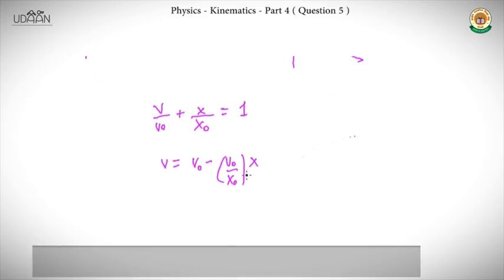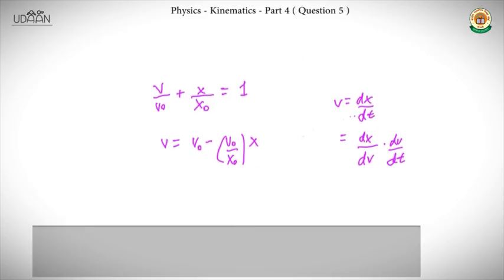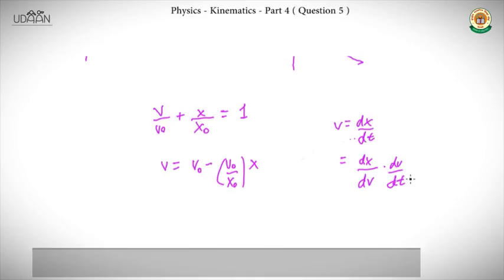We know that velocity v = dx/dt. To introduce acceleration, we apply the chain rule: dx/dt = (dx/dv)·(dv/dt). So velocity equals (dx/dv) multiplied by acceleration. We can rearrange: (dx/dv)·a = v₀ - (v₀/x₀)·x.